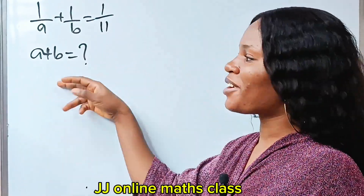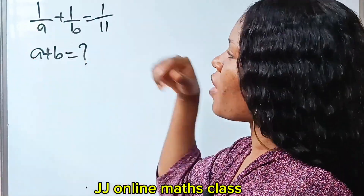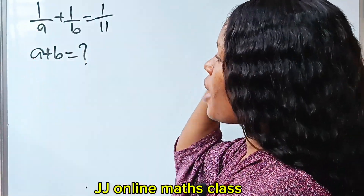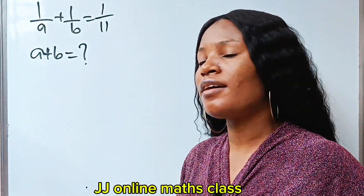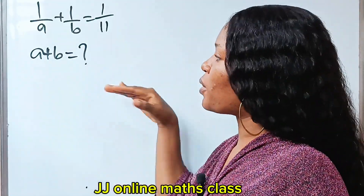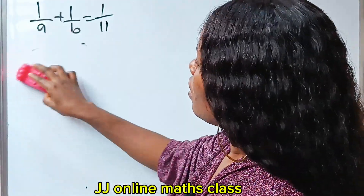Hi! Let's solve this together. If 1 over A plus 1 over B equals 1 over 11, what is A plus B equal to?